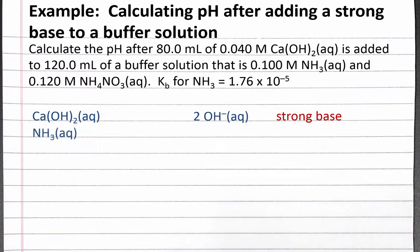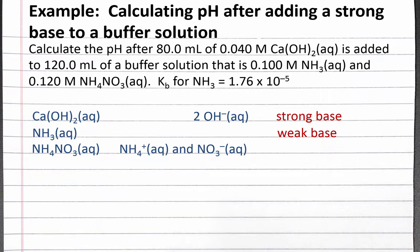Our buffer solution has ammonia, which is a weak base, and ammonium nitrate. Ammonium nitrate is a strong electrolyte, so it breaks apart completely into ammonium and nitrate ions. Nitrate, however, is the conjugate base of a strong acid — nitric acid — so the nitrate ion will not affect pH; we do not need to keep track of it. Ammonium is the conjugate acid of a weak base, ammonia, which is why we have a buffer solution. The hydroxide from calcium hydroxide will react with our weak acid, ammonium.